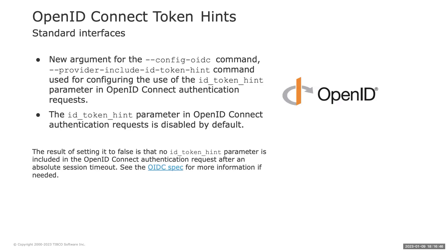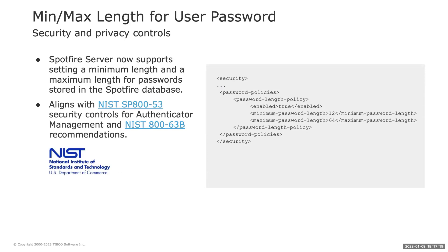Regarding OpenID Connect, there is a new configuration parameter in the config-oidc command to configure the use of the id_token_hint parameter in OpenID Connect authentication requests. This parameter is now disabled by default — setting it to false means it is not included in authentication requests after a session times out. Additionally, to align with NIST recommendations and security controls, we added support in Spotfire Server for setting a minimum and maximum password length for passwords stored in the Spotfire database.